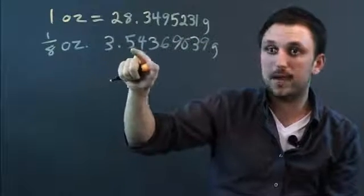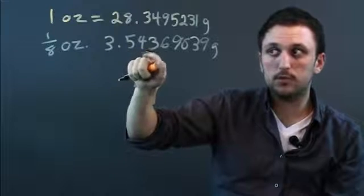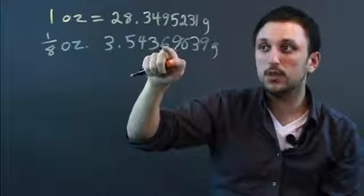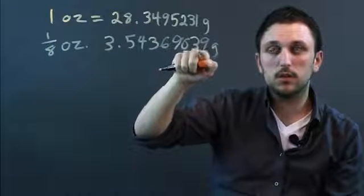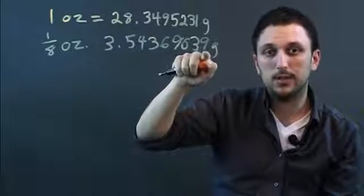So that's 3.5, which is the tenths place, the hundredths place, the thousandths place, the ten-thousandths, hundred-thousandths, millionths, ten-millionths, and hundred-millionths place.